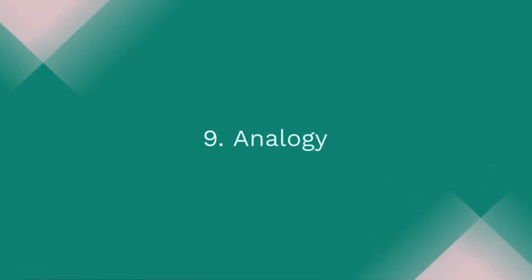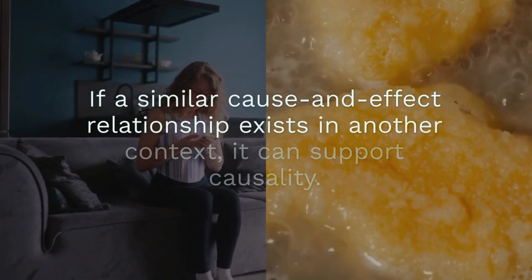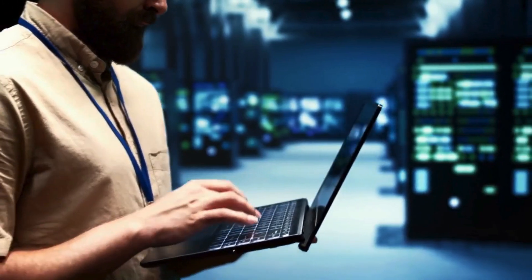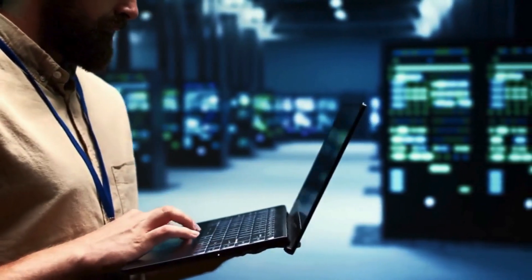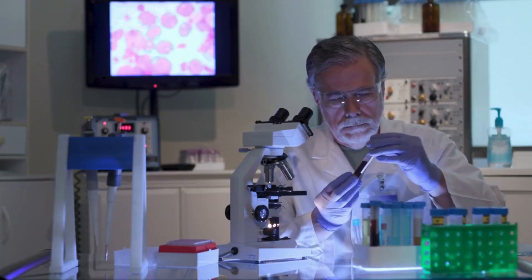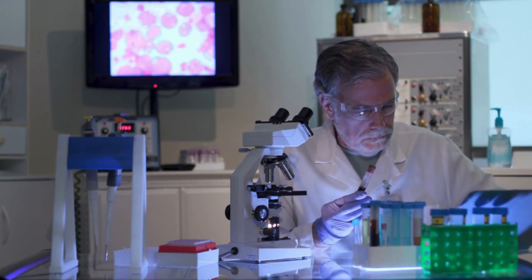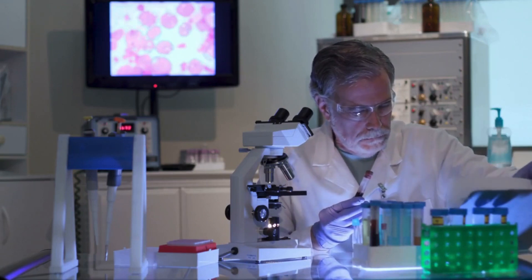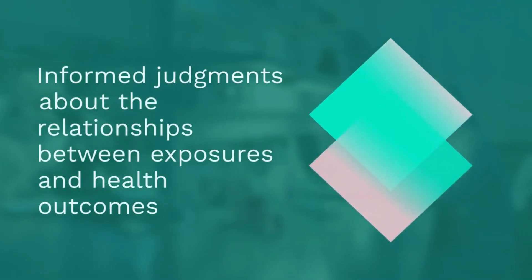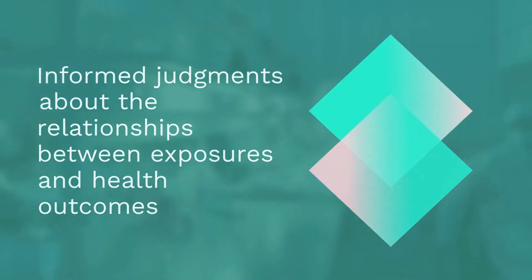9. Analogy. If a similar cause-and-effect relationship exists in another context, it can support causality. While this is considered weaker evidence, it can still be useful. For example, knowing that similar chemicals cause certain cancers makes it reasonable to suspect related substances may have similar effects. By considering these nine criteria, researchers can make informed judgments about the relationships between exposures and health outcomes.